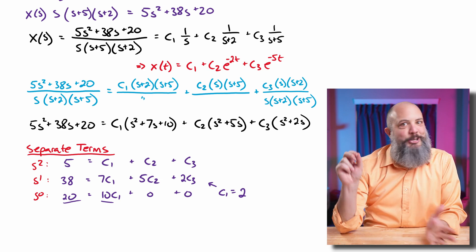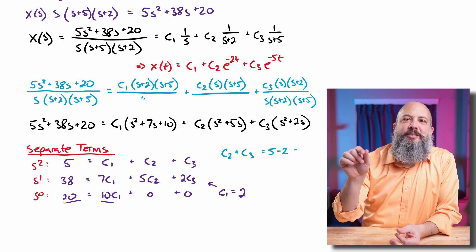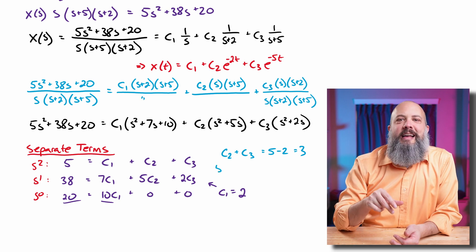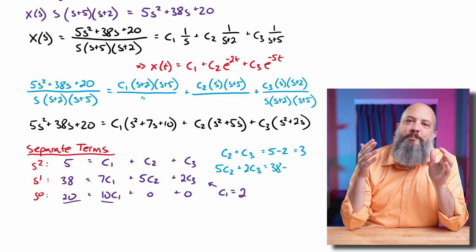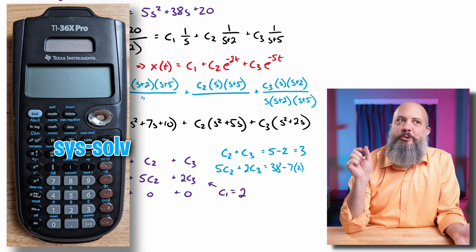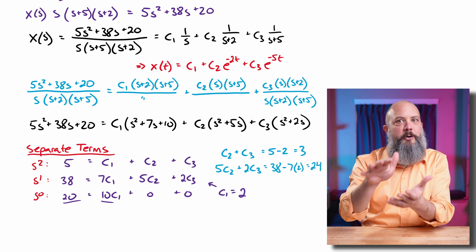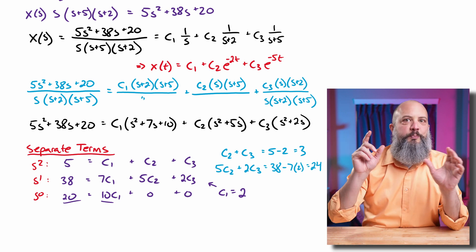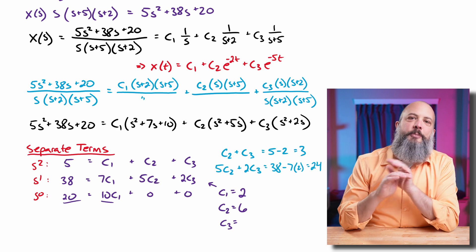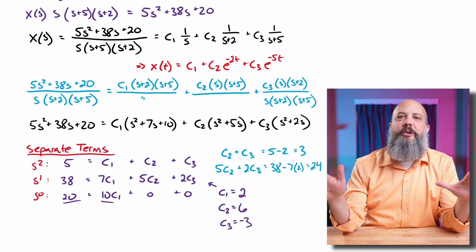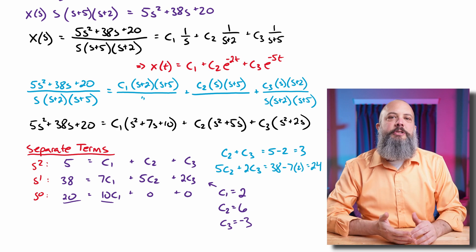That leaves two equations and two unknowns. I can rewrite this in matrix form, plugging in C1 equals 2: so C2 plus C3 equals 3, and 5C2 plus 2C3 equals 24. I plug this into my calculator — I've got a TI-36X Pro which has the system solver. If you don't know how to solve a matrix problem on your calculator, definitely look that up — this is going to save you so much time in your college career. Calculator gives me C2 equal to 6, C3 equal to negative 3.